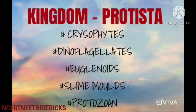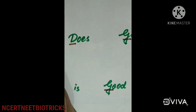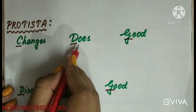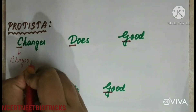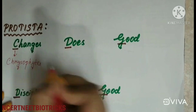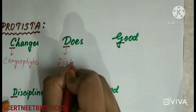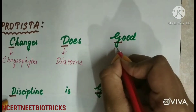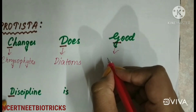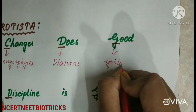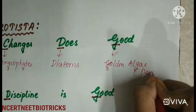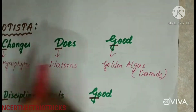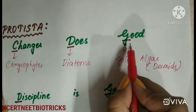Next we have Kingdom Protista, which is divided into 5 kinds. We will remember Chrysophytes as 'changes does good' — C for Chrysophytes, D for Diatoms, and G for Golden algae, also called desmids.